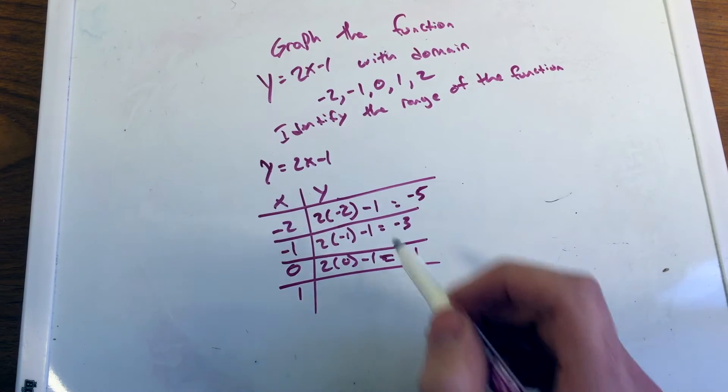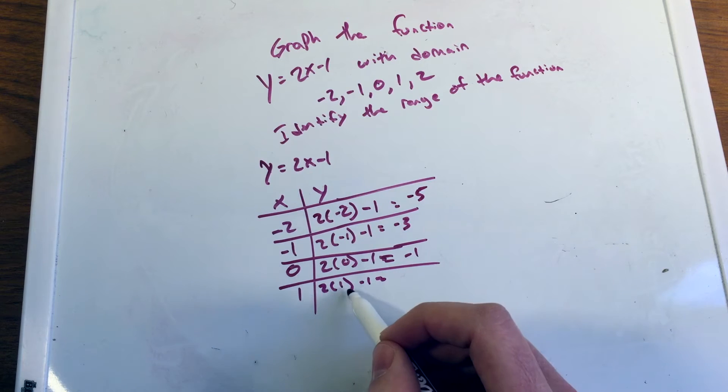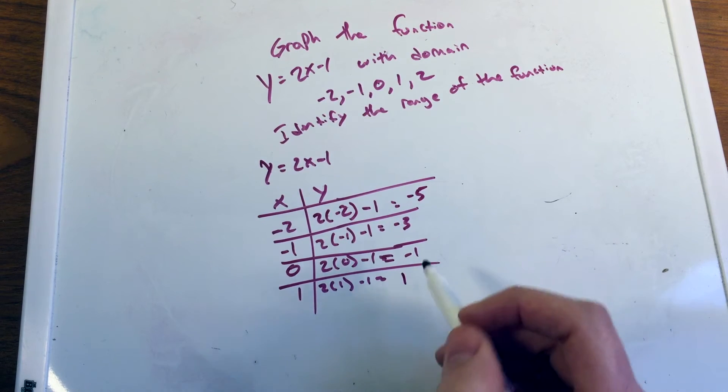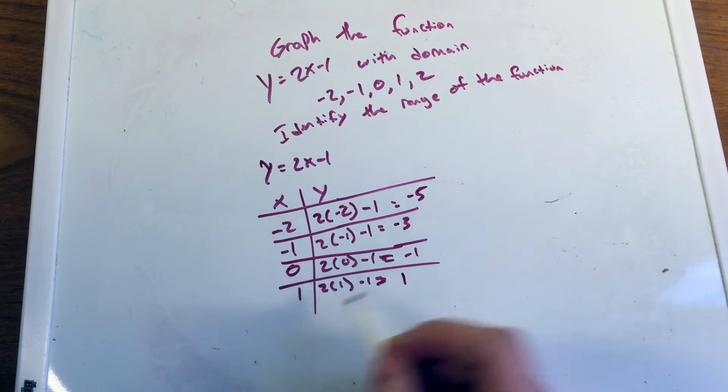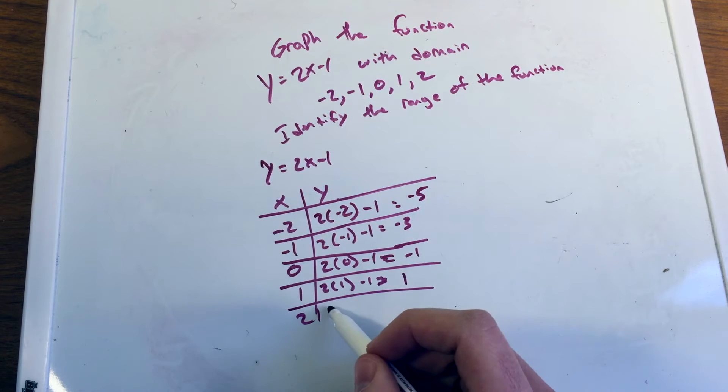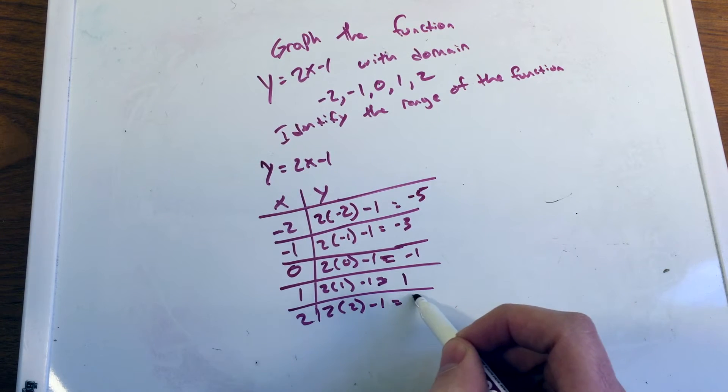1 in for x, we're left with 2 times 1 minus 1. 2 times 1 is 2. Minus 1 comes out to be a positive 1. And lastly here, we have plug in a 2, our last domain for x. And 2 times 2 minus 1. 2 times 2 is 4. Minus 1 is 3.